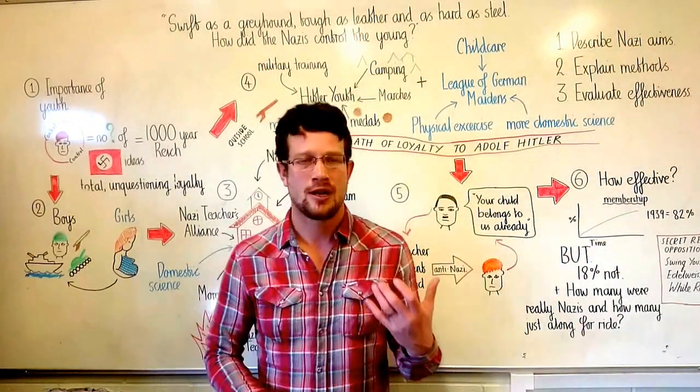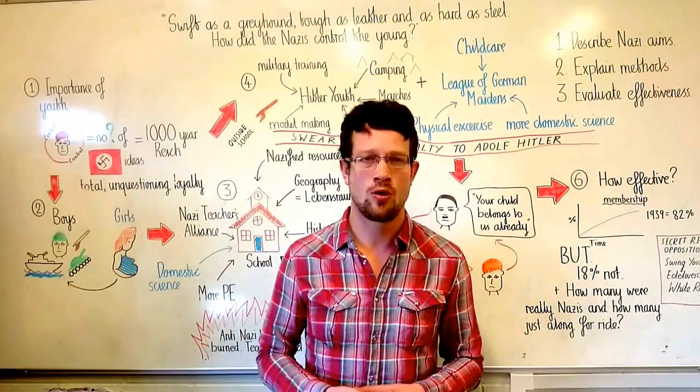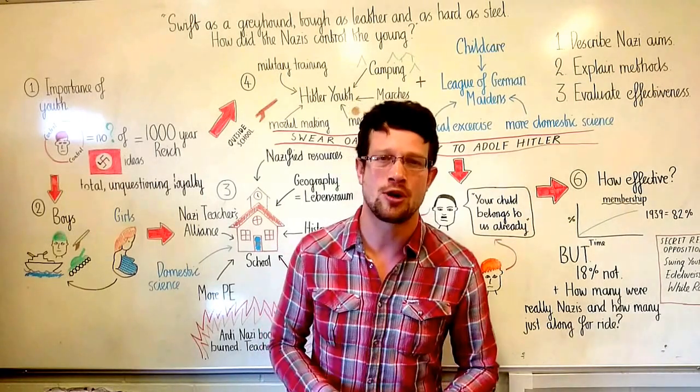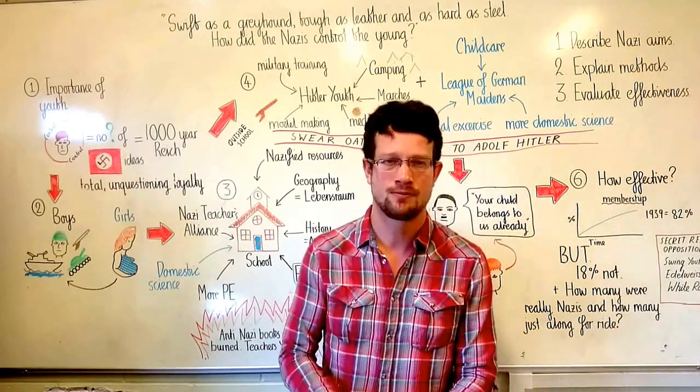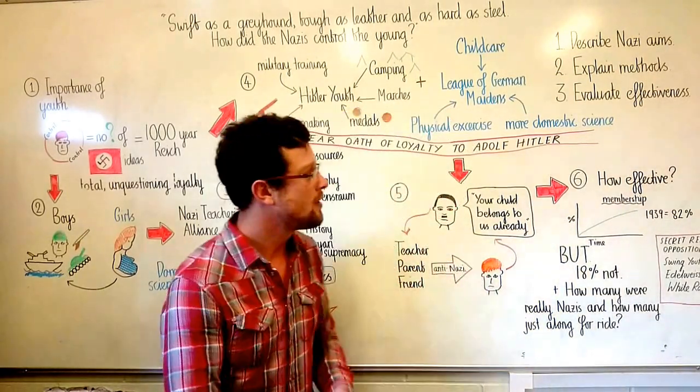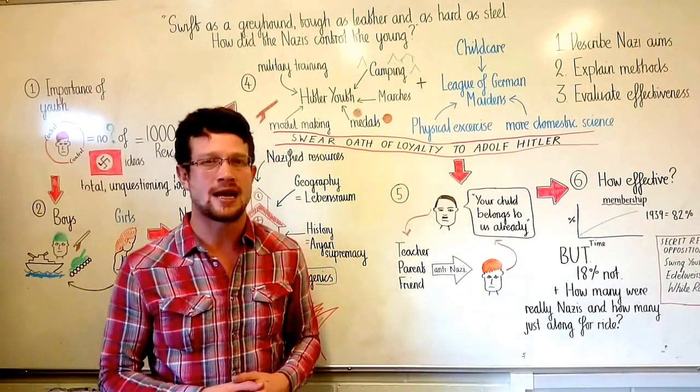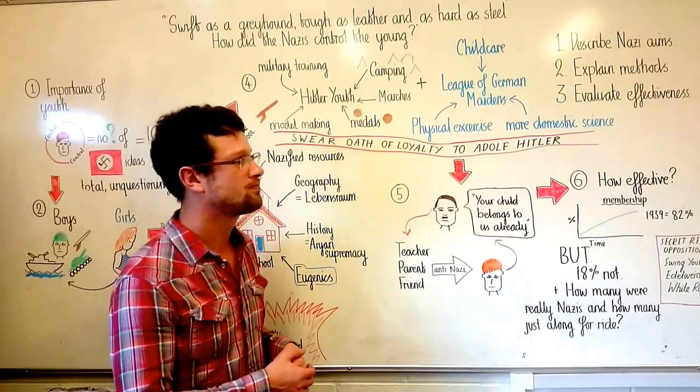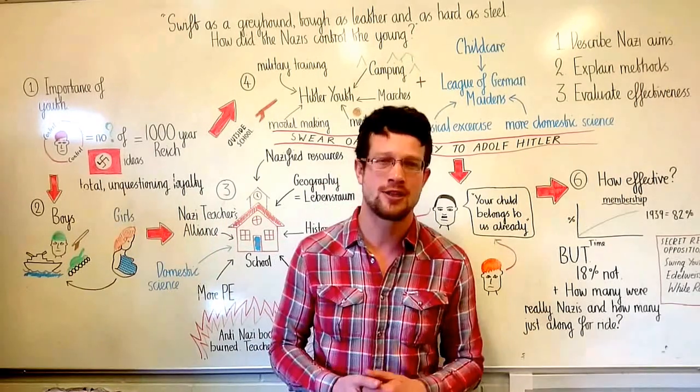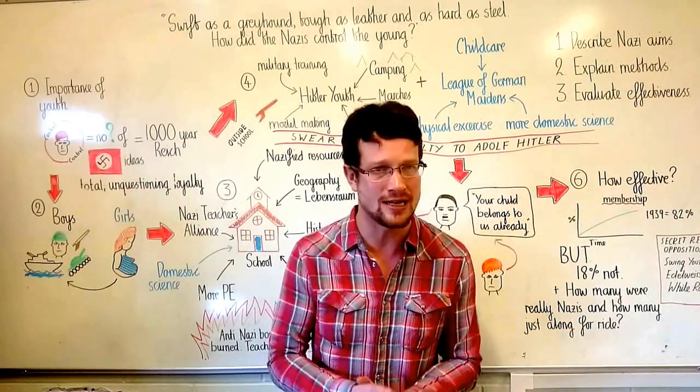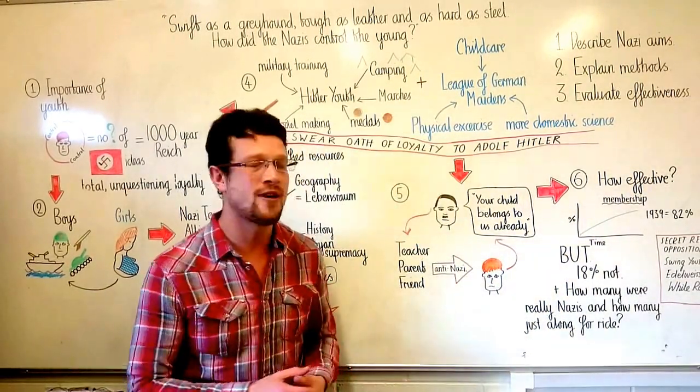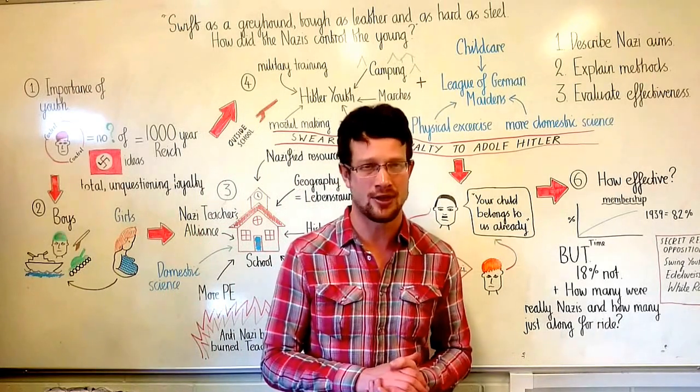Hello and welcome to micro teaching. Today we're looking at Nazi control of the young. We've got three things we want to be able to do by the end of this session. First of all, we want to be able to describe Nazi aims towards their young people. Second, we want to explain the methods the Nazis used to try and achieve these aims. And thirdly, we want to evaluate the effectiveness of these methods.